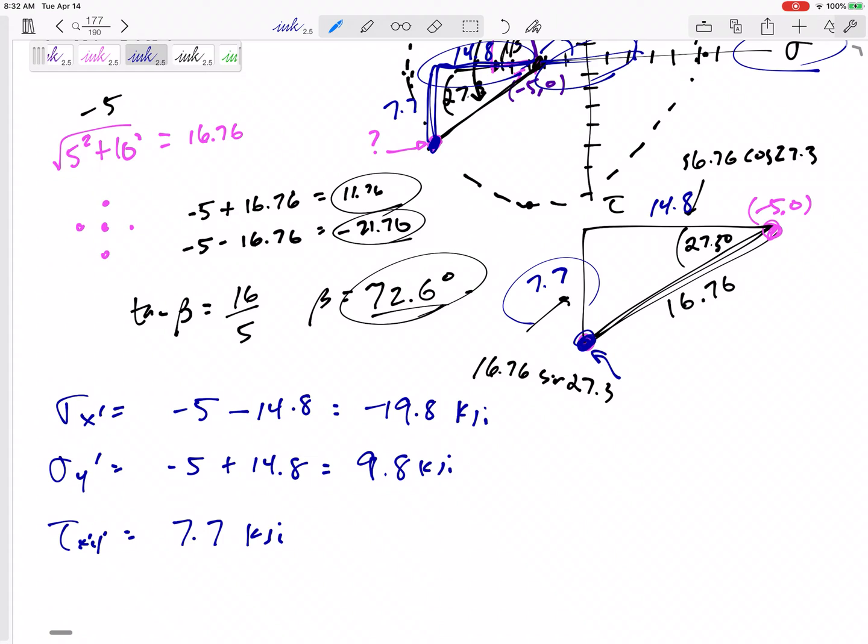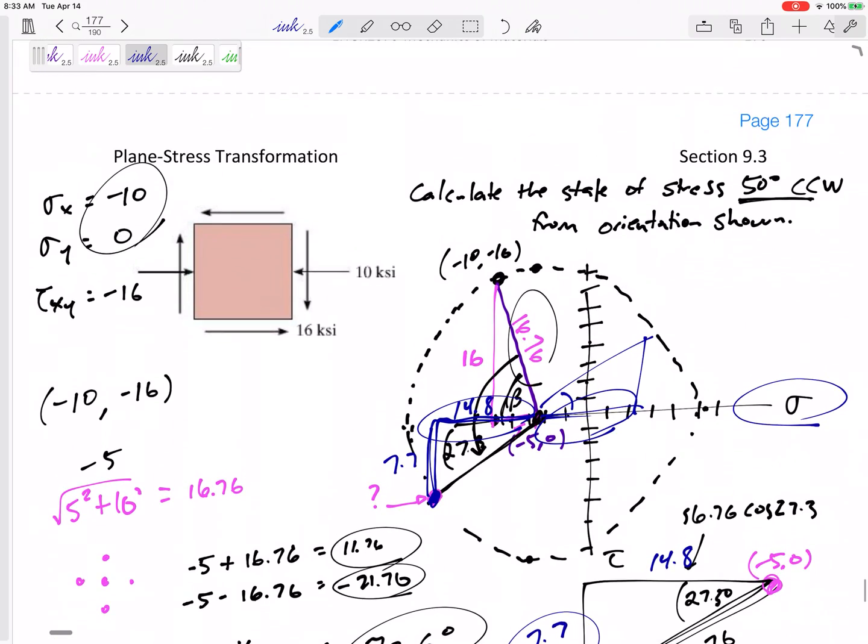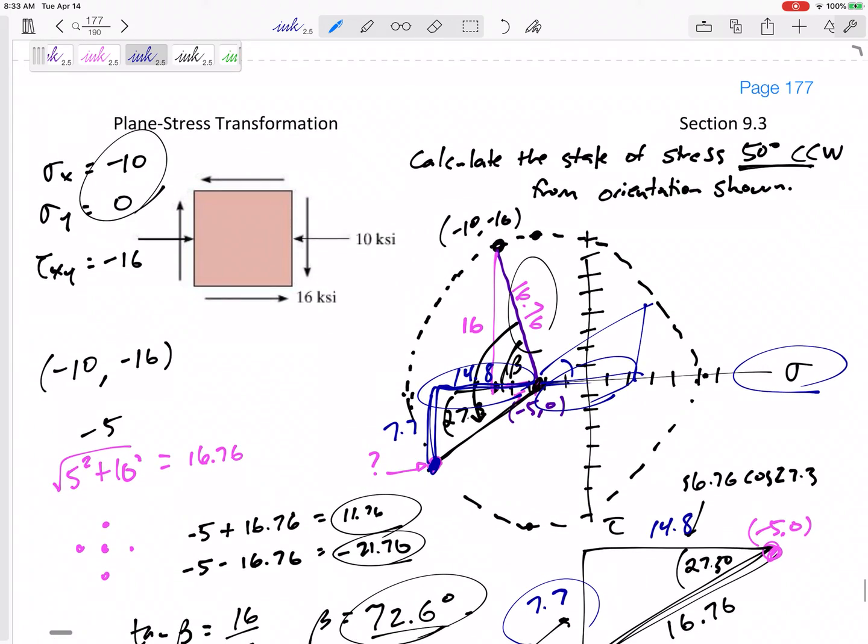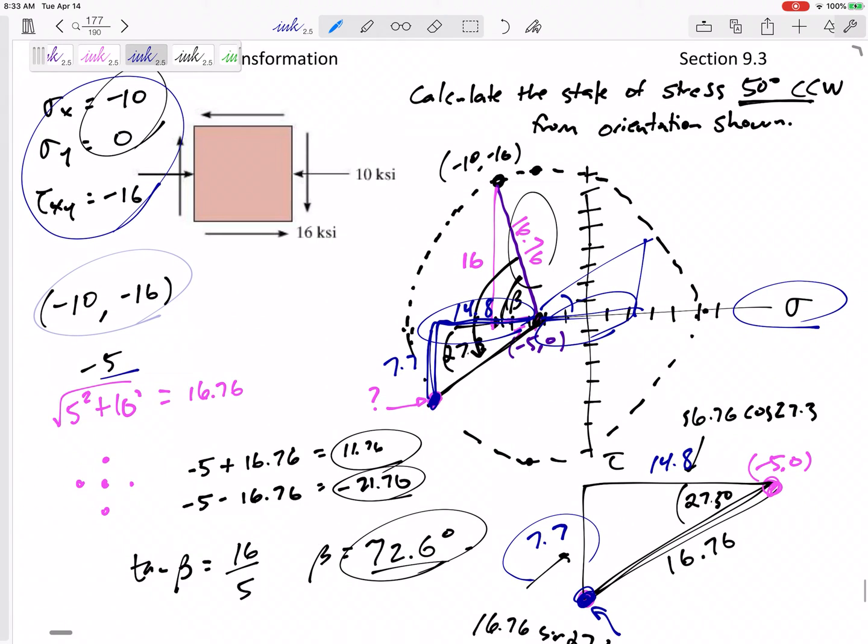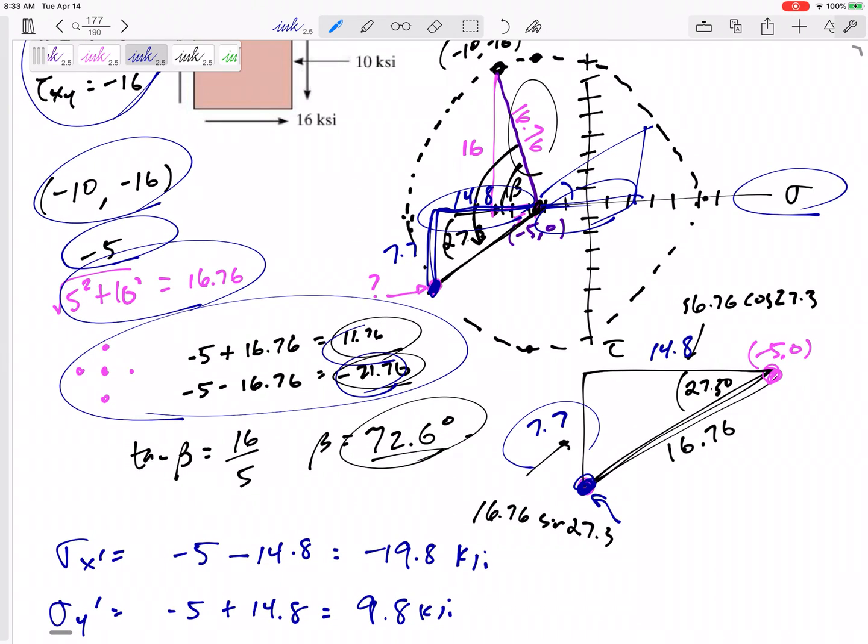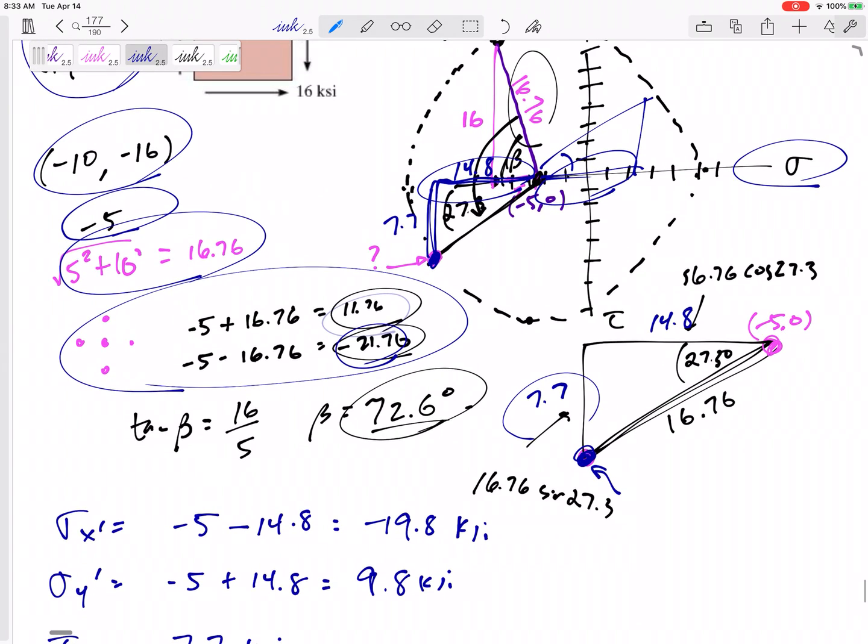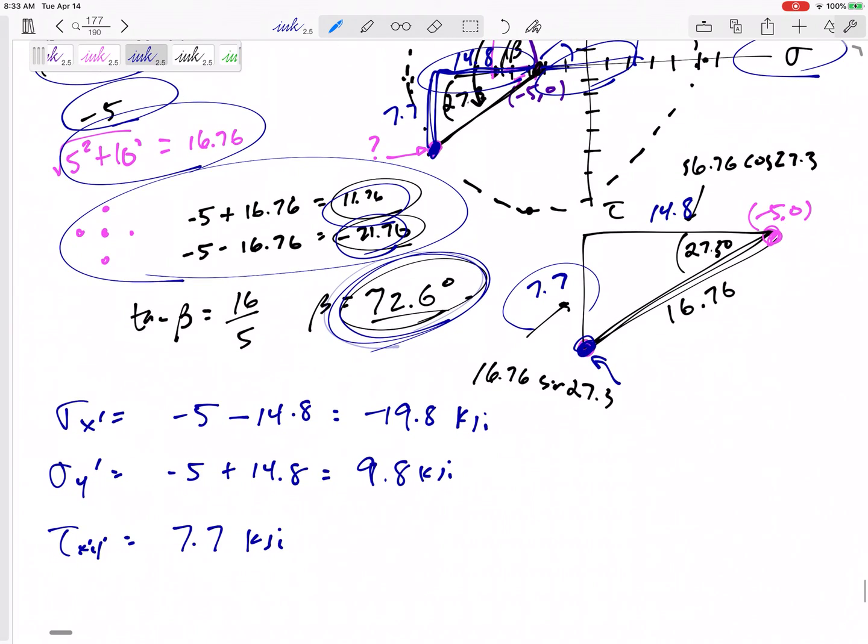I think this is straightforward. Make sure you start with the right starting point, find the center, find the radius, sketch your circle. While you're sketching your circle, you're finding the principal stresses. Find out where you're starting at so that you know where you need to go to.